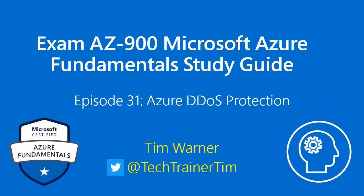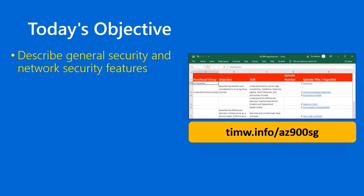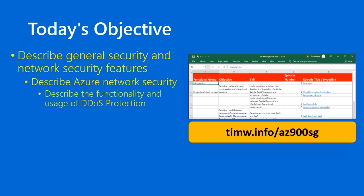Hi there. Welcome to Exam AZ-900, Microsoft Azure Fundamentals Study Guide. This is episode 31, entitled Azure DDoS Protection. My name is Tim Warner. Our AZ-900 objective today starts with the functional group Describe General Security and Network Security Features, passes into Describe Azure Network Security, and terminates with the skill Describe the Functionality and Usage of DDoS Protection. If you want a copy of the entire outline for this study guide, as well as links to the videos, go to timw.info/AZ-900SG.